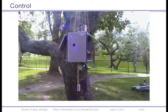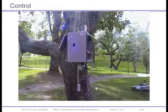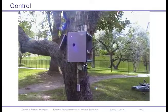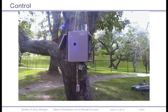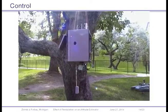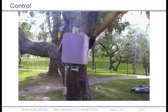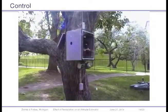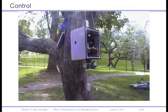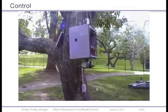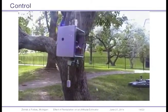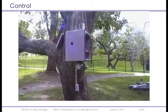Here is a ground test of the attitude control and determination system. They're going to give it a disturbance, and you'll see that the platform will reorient itself. The actuator on board is a DC motor with a flywheel attached.